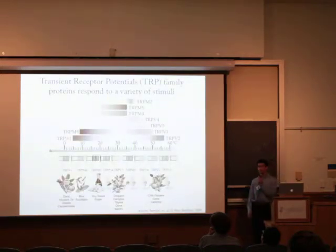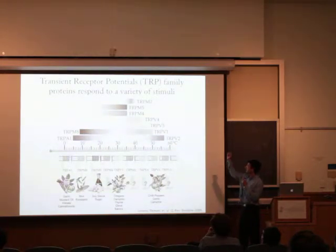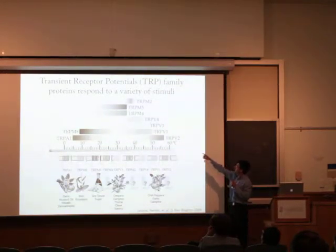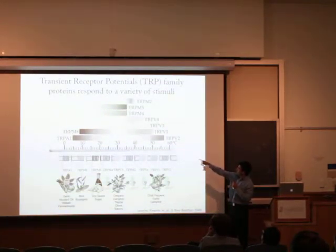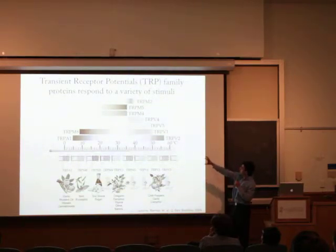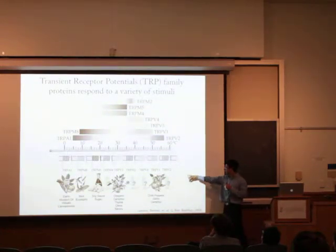TRPA1, or the TRP — the transient receptor potential family — is a family of protein channels. As this diagram shows, it gives a specific example of protein channels and the different stimuli they respond to. We can see here the temperature gradient, and the blocks show which temperature range each specific TRPA1 protein channel responds to. Down here, it also shows the different chemicals that each specific TRPA1 protein channel responds to.